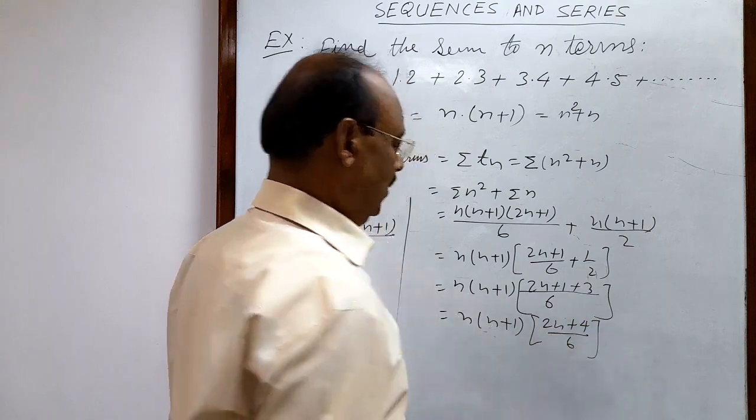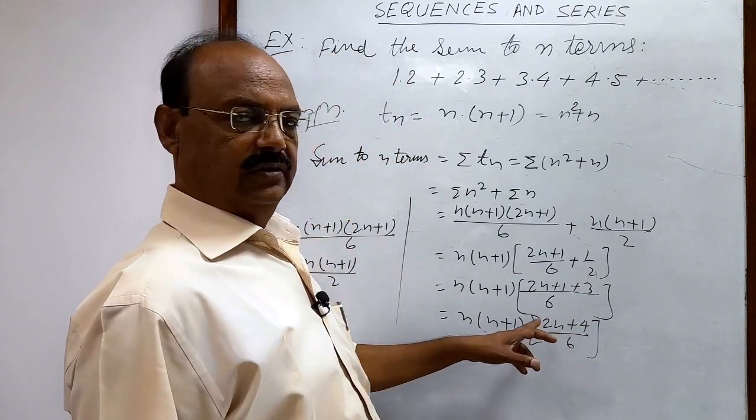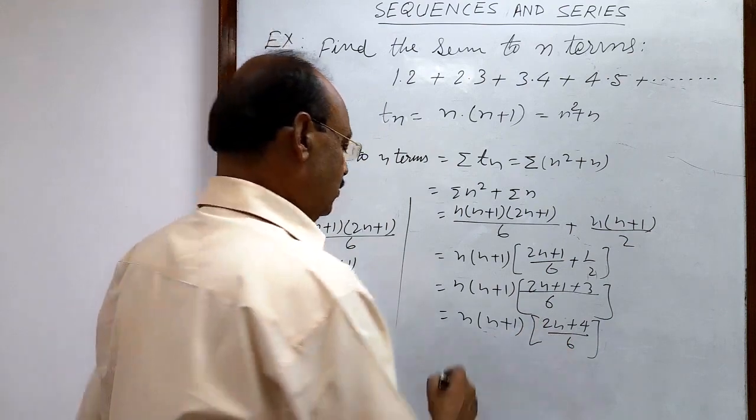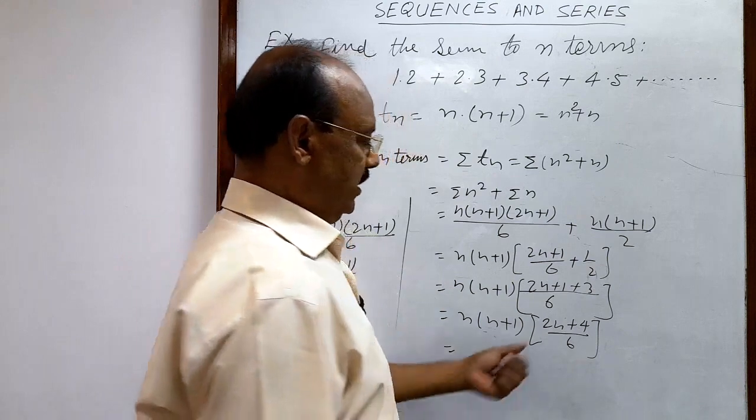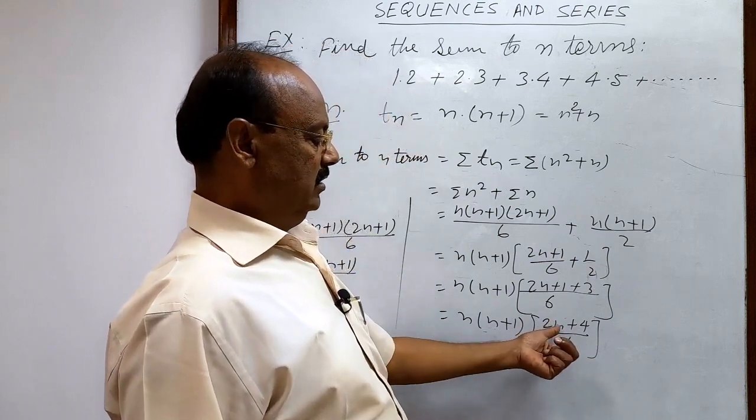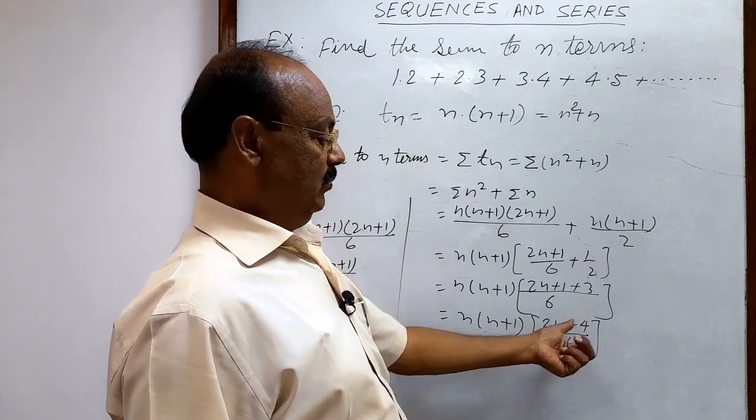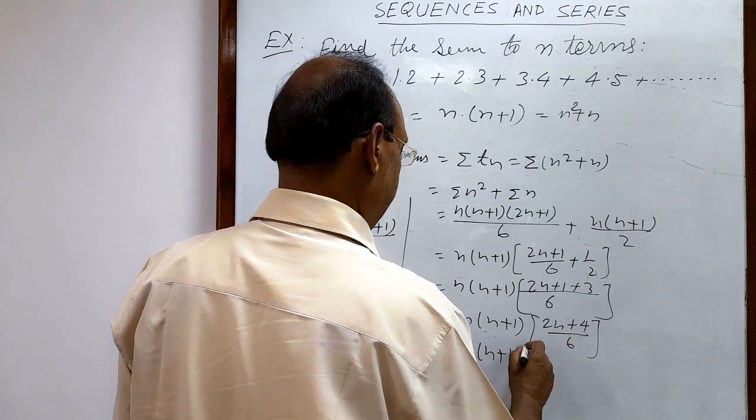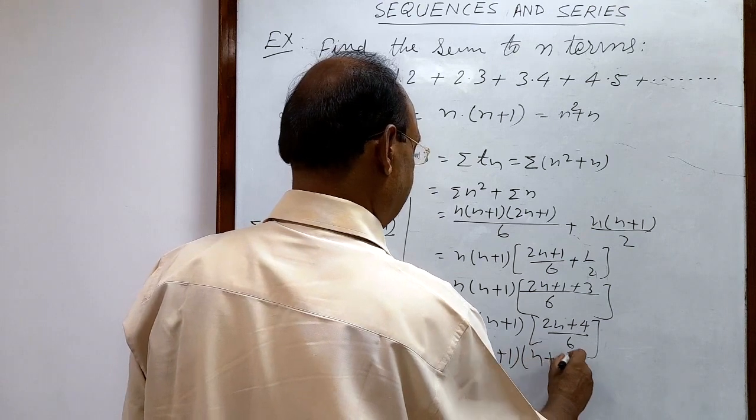This equals n(n+1)(2n+4)/6. You can take 2 common here, which will cancel with the 6, leaving the denominator as 3. After taking 2 common, the remaining expression is n+2. So we get the answer: n(n+1)(n+2)/3.